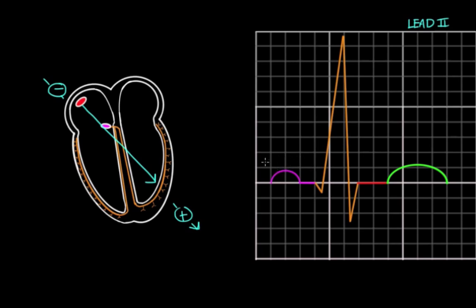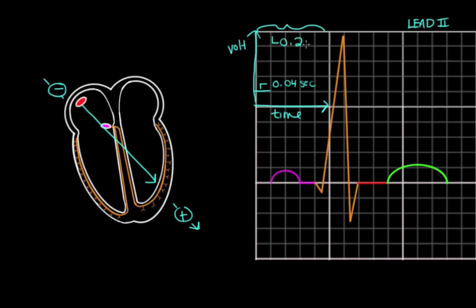Often people say that Lead 2 is the best lead to see the P wave. An EKG gives us information on voltage over time, or the change in voltage over time. Voltage is on the y-axis and time is on the x-axis. Every small box running in the x-axis or time direction represents 0.04 seconds, and there are 5 small boxes per every big box. So each big box represents 0.2 seconds.